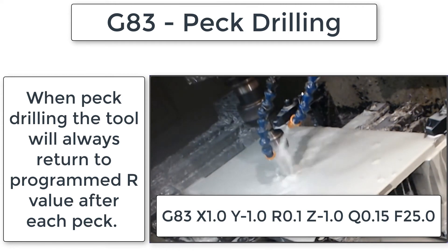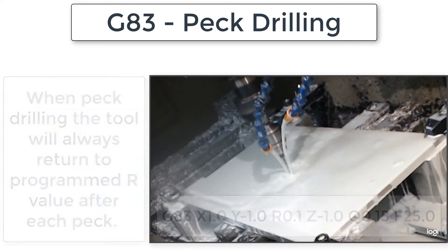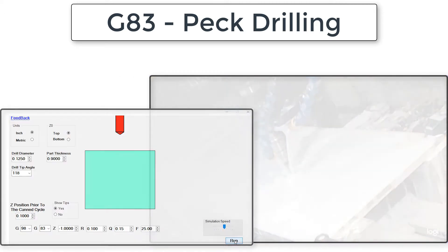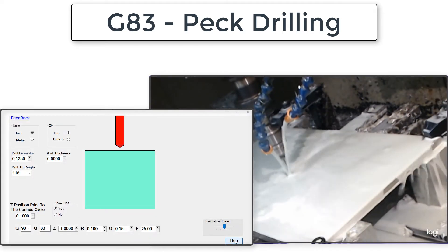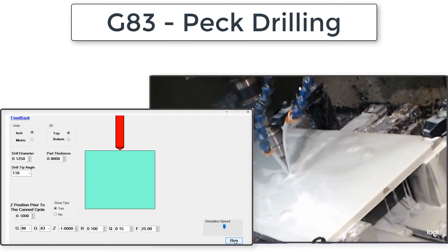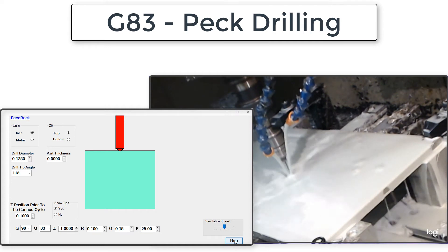Once it reaches the depth of negative 50 thou, it will rapid the tool out of the hole to the R value, 0.1 above the part for this code.